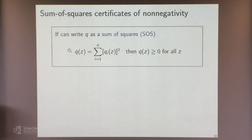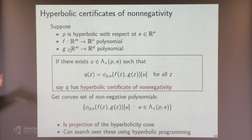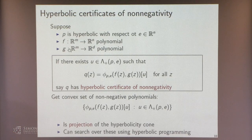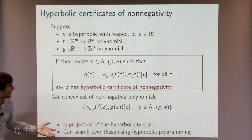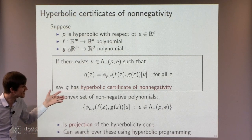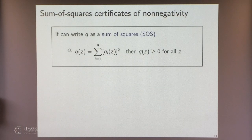I want to now move toward understanding how these relate to sums of squares. I've given a way to produce lots of non-negative polynomials. If these polynomials are all sums of squares, it's probably not very interesting—so let's see how they relate to sums of squares in a few different ways.